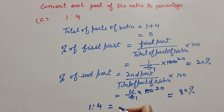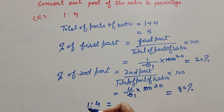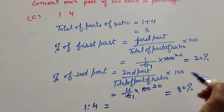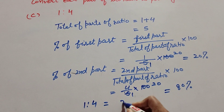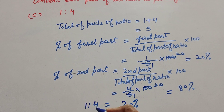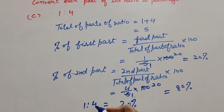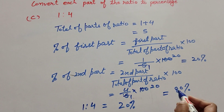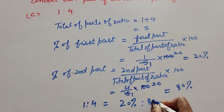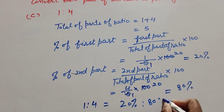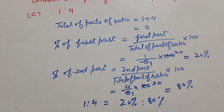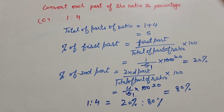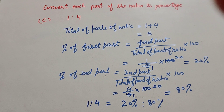The given ratio is 1:4. When we change this ratio into percentage, the first part 1 is equal to 20 percent, and the second part 4 is equal to 80 percent. Thanks for watching — like, comment, and share my video, and subscribe to my YouTube channel.